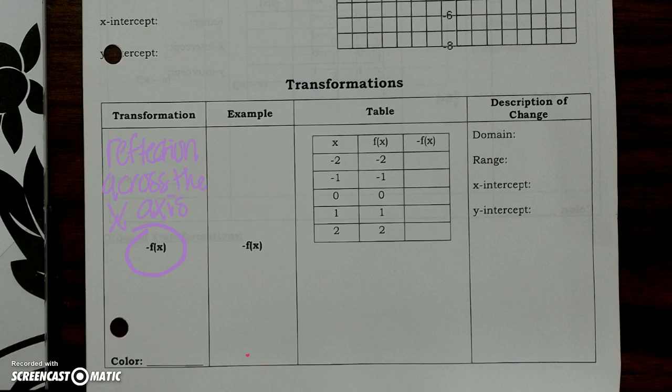So if I know this is a reflection across the x-axis, I need to figure out what my equation is. My original f of x is equal to x. Now I'm going to change it to a negative f of x. I'm going to take this whole function and negate it — so negative x. When we multiply by negative one, a negative f of x in this case would just be negative x. Make sure you put your color — I'm using purple.